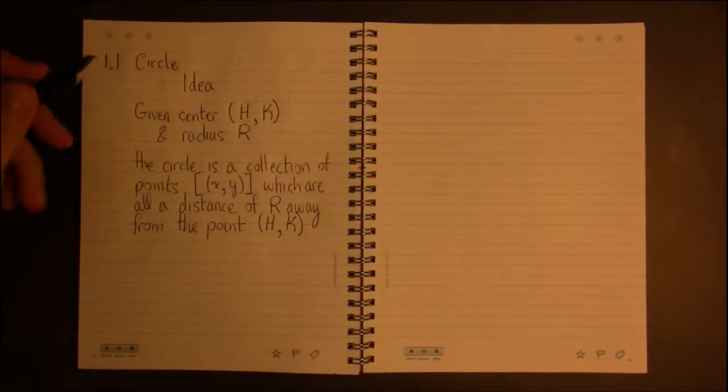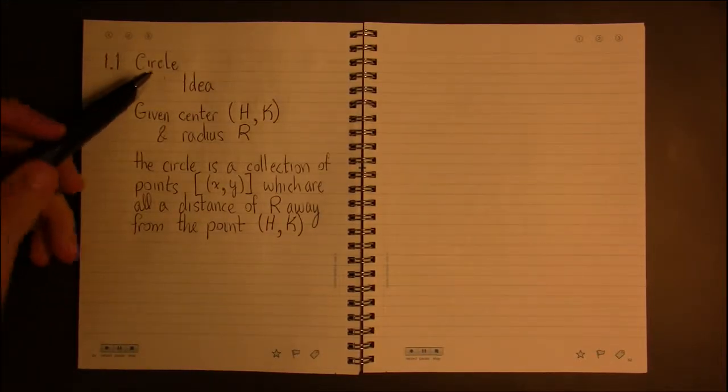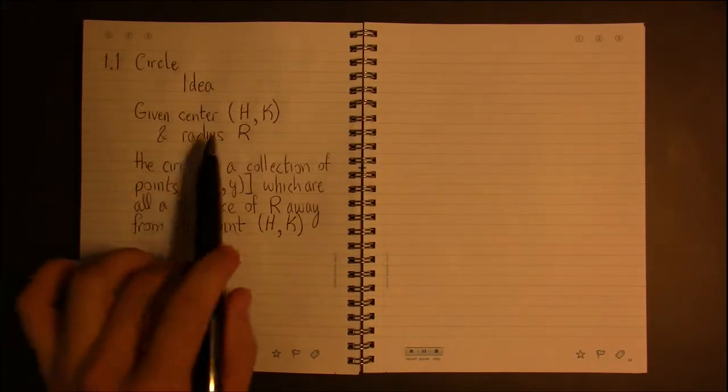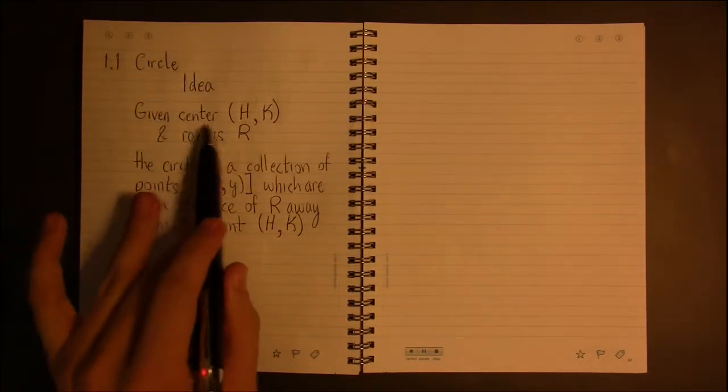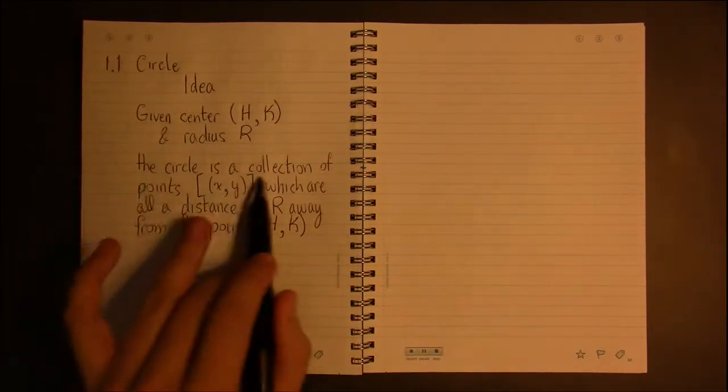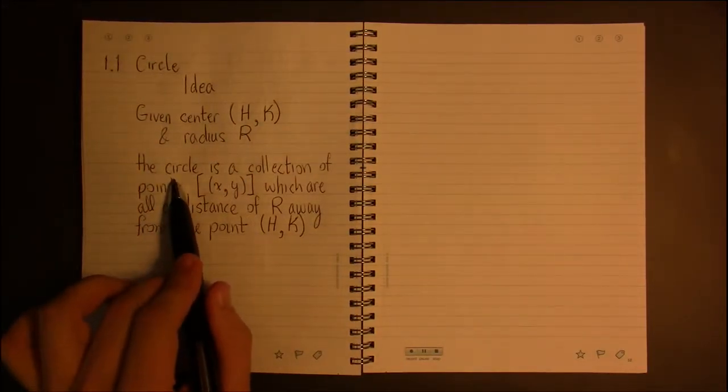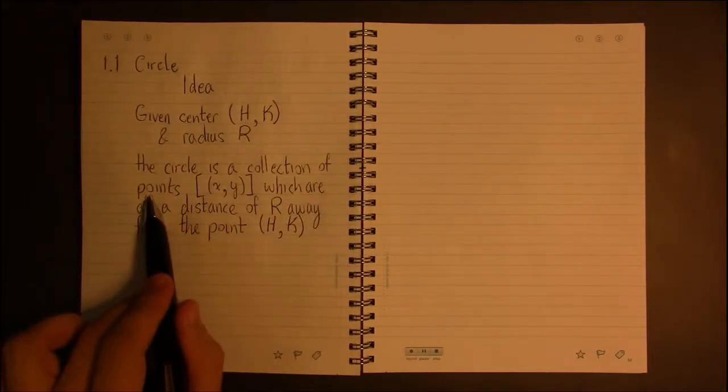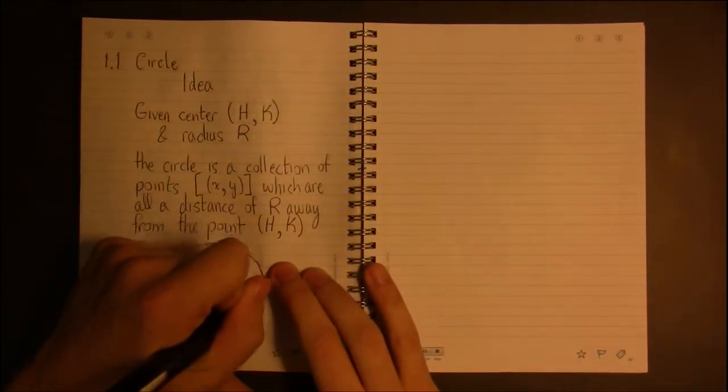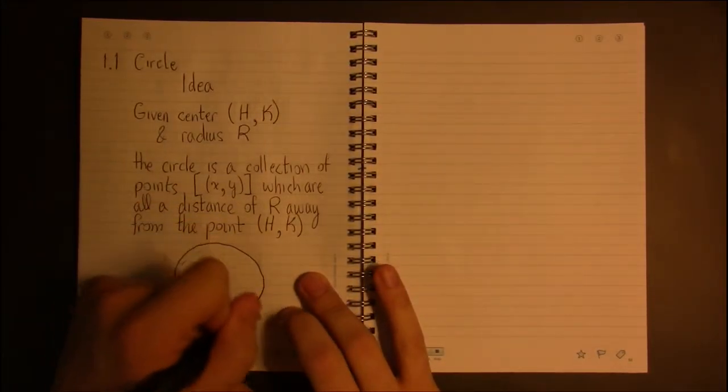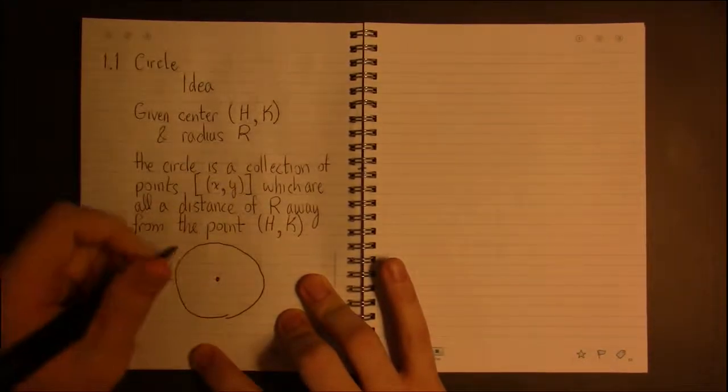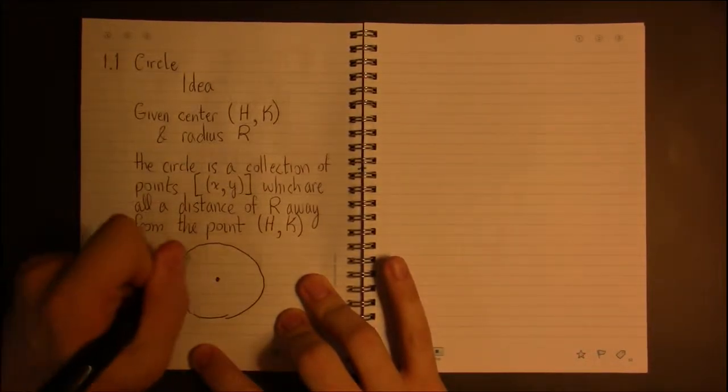Alright, finishing off section 1.1 is a discussion about circles. Now we all know that circles have a center and a radius, but mathematically the circle itself is just a collection of points. So while you may think of this as just some circle or curved line, it's really just a bunch of points that are so close together that they form a line.